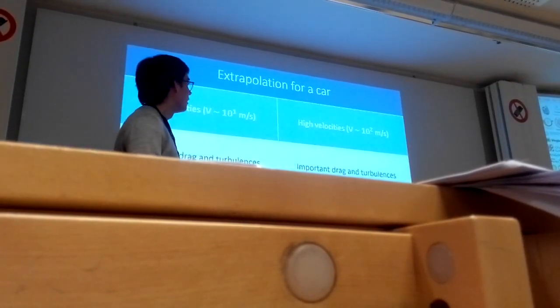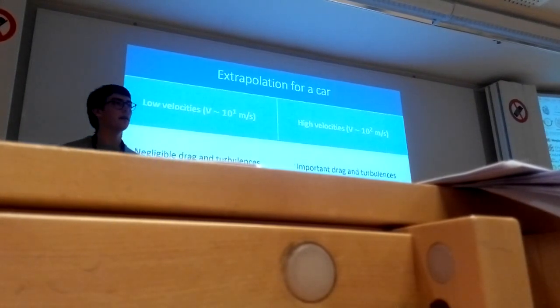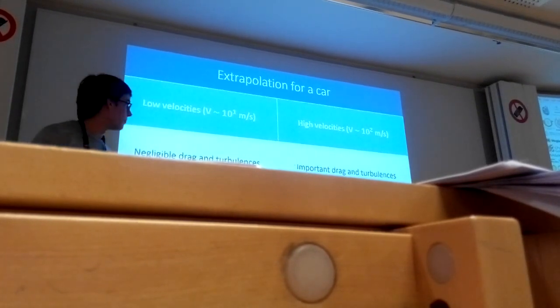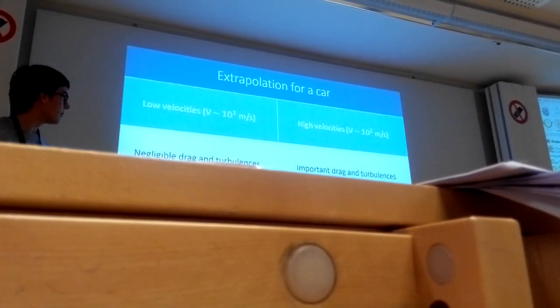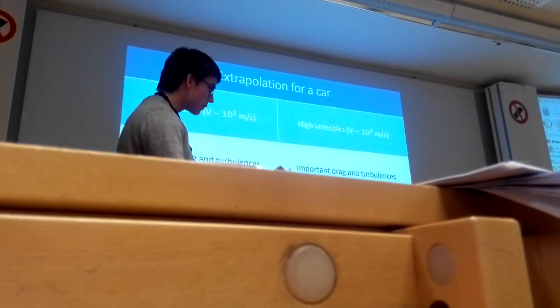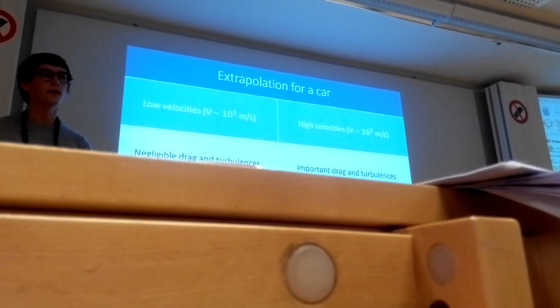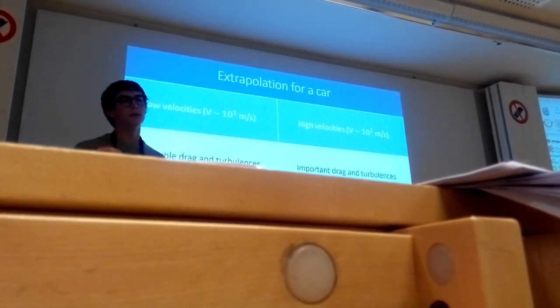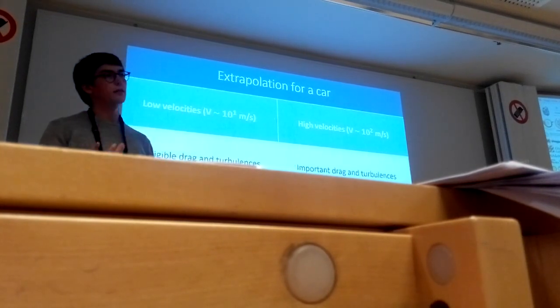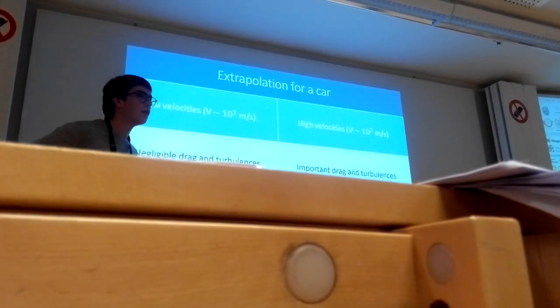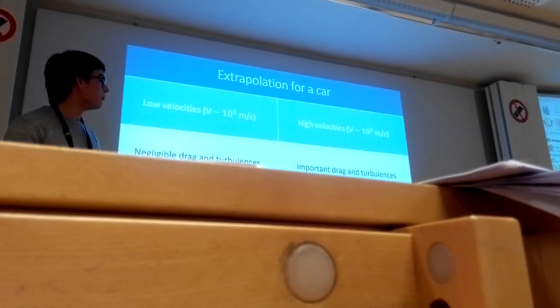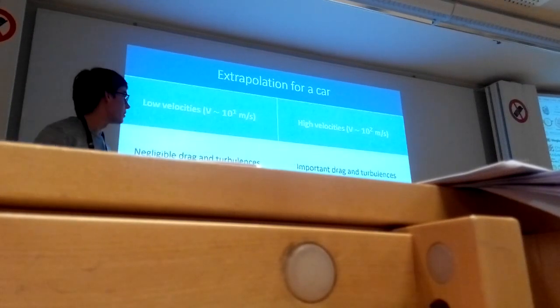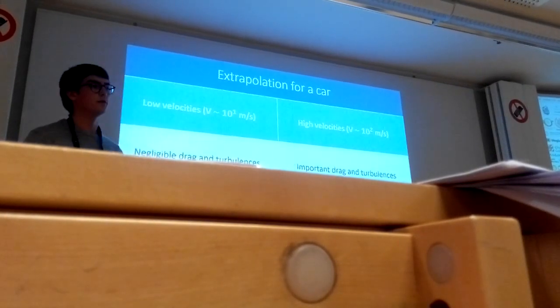Whereas for high velocities, we would have important drag and turbulences in the same setup with a car. We can question whether this transposition is valid. If we assume that at high velocities the drag is very high, we can consider that the height of the spray tail would be constant, and therefore the time of flight of the droplet will also be constant. We could think that the length of the spray tail would be proportional directly to v to the power of 1.